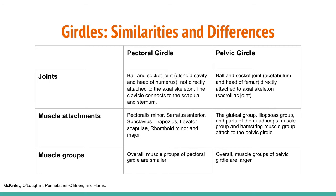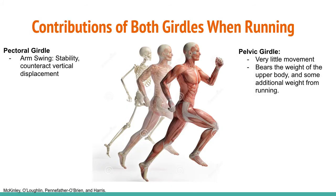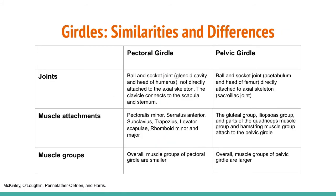The pectoral girdle creates a base from which the head of the humerus and its ball and socket joint with the glenoid fossa of the scapula can move the arm in multiple directions. Muscles that position the pectoral girdle are located on either the anterior or posterior side of the thorax. The anterior muscles include the subclavius, pectoralis minor, and serratus anterior. The posterior muscles include the trapezius, rhomboid major, and rhomboid minor. When both rhomboids are contracted, your scapula moves medially, which can pull your shoulder and upper limb posteriorly.